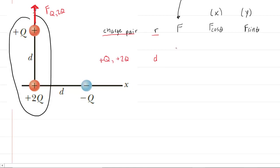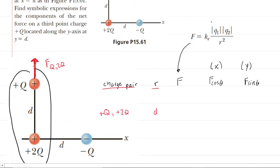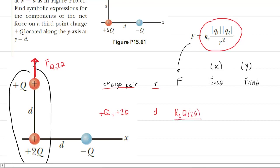F would be the actual electrostatic force. If we scroll up, we know that the electrostatic force is represented by Coulomb's law equation. So what we could write down is K sub E. Our charges are both positive, so we don't necessarily need the absolute value symbols. We would just have Q multiplied by 2Q, and then we divide that by the distance squared, which is D squared.